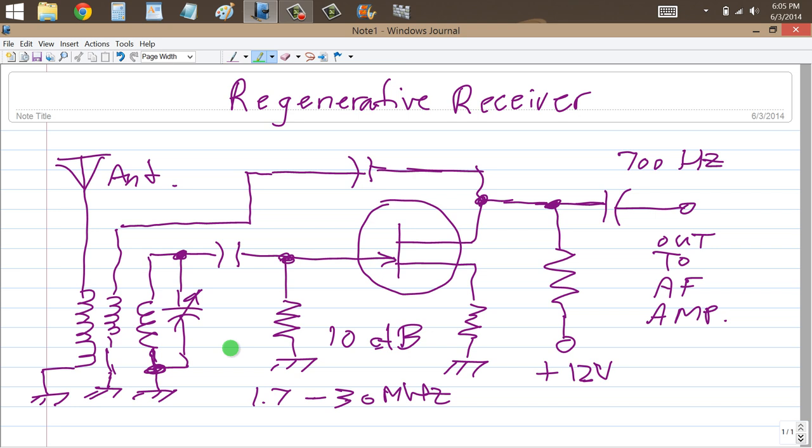There's just one bugaboo with regenerative receivers like this. This oscillator can cause radiation out of the antenna and turn your regenerative receiver into a low-power radio transmitter, and that can actually produce interference to other stations or other people who are trying to receive on the same frequency. So that's why you won't find this kind of receiver very often.